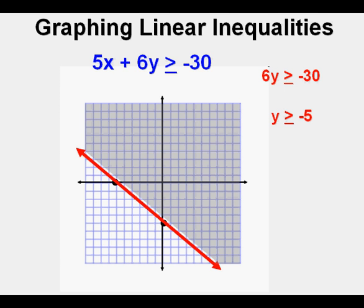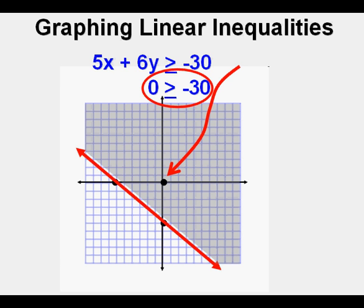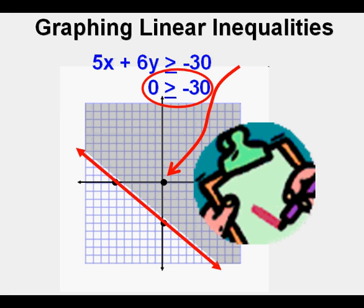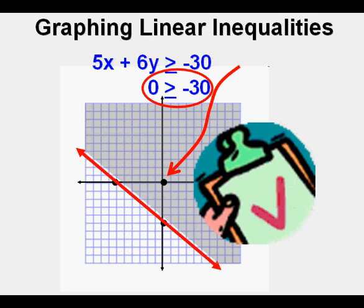Since it's greater than, we shade upward. We mark the point 0, 0 to check — since both x and y are 0, this gives us 0 is greater than or equal to negative 30. Is that correct? Yes, it is, because the point is in the shaded area and is part of the solution set. Check.